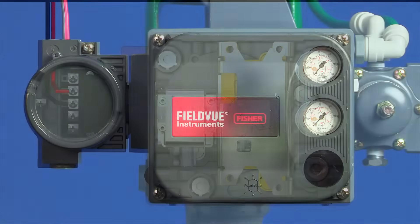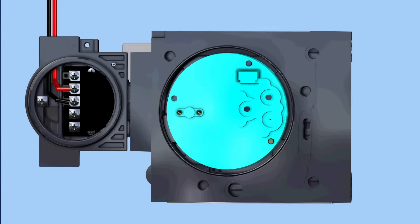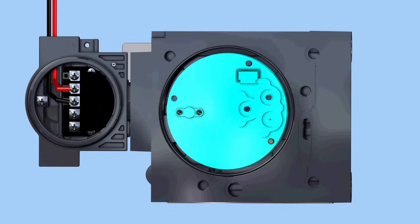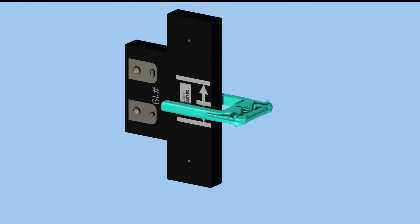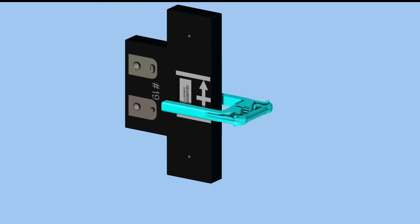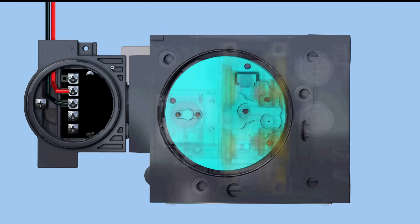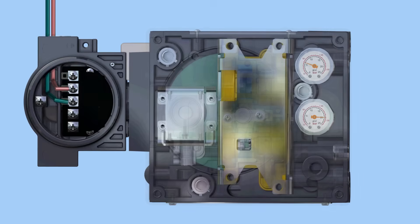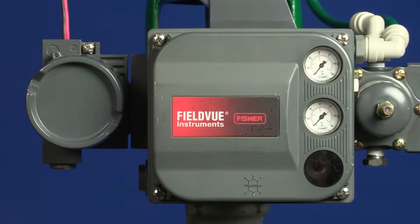In this example, we can see that the electronic control signal is sent directly to the microprocessor, providing an input or set point. Valve position feedback is sent to the microprocessor from an electronic sensor. The input and feedback are summed against each other to determine the error, and the microprocessor then calculates what output changes need to be made to correct that error.